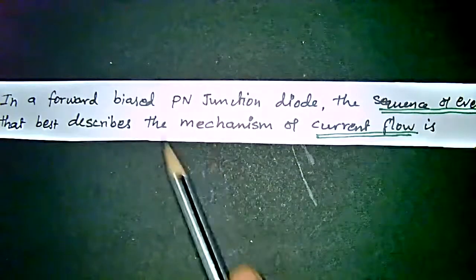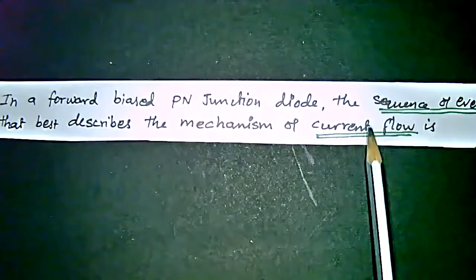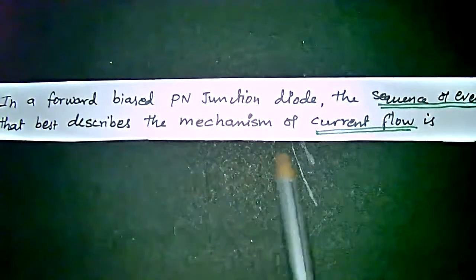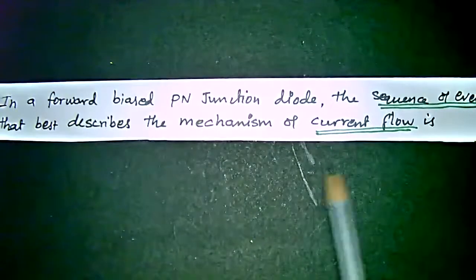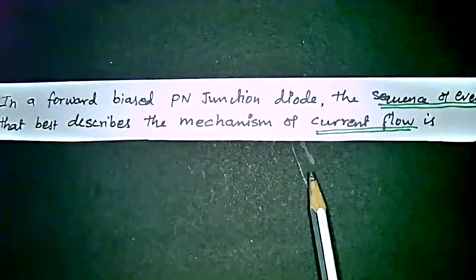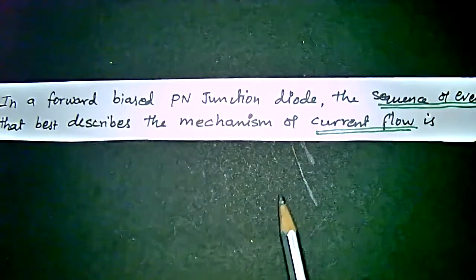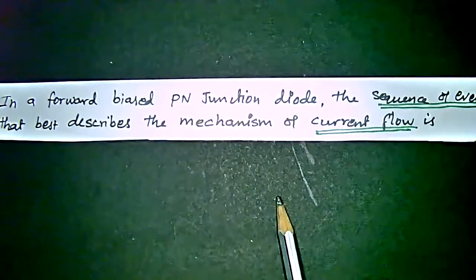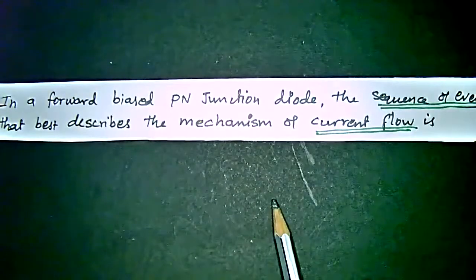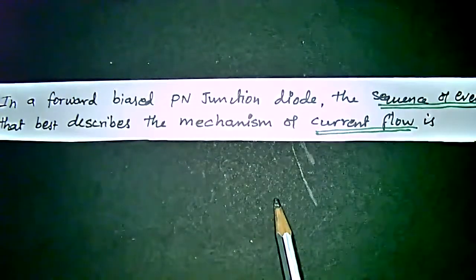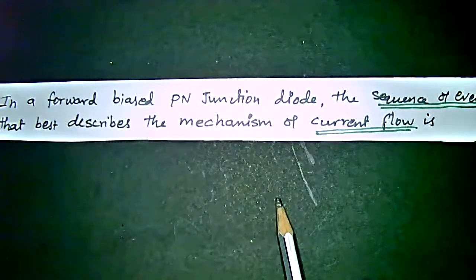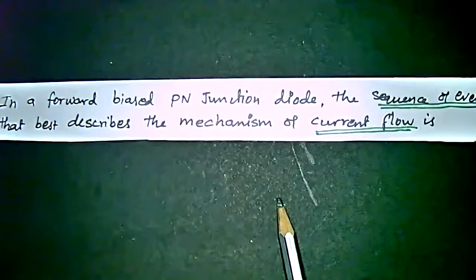Hi. In a forward-biased PN junction diode, the sequence of events that best describes the mechanism of current flow — the question asked is: when connecting the PN junction diode in forward bias, what is the order of events? The events are combination, recombination, diffusion, and injection. What are these values in the order of current flow?